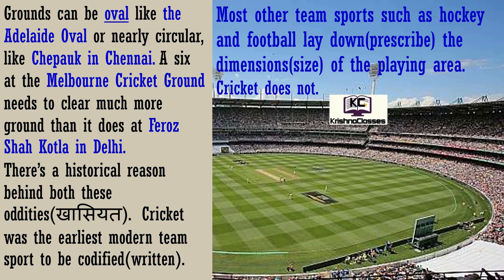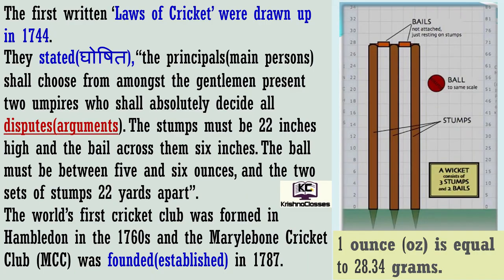A six at the Melbourne Cricket Ground needs to clear much more ground than it does at Firoz Shah Kotla in Delhi. There is a historical reason behind both these oddities. In dono khasiyaton ke peeche ek historical reason hai, aitihasik karan hai. Cricket was the earliest modern team sport to be codified. Cricket aisa pehla aadhunik team sport tha jise codified kiya gaya, jise likhit roop mein rakha gaya. The first written laws of cricket were drawn up in 1744. 1744 mein sabse pehli baar cricket ke laws likhe gaye. They stated: the principals shall choose from amongst the gentlemen present two umpires who shall absolutely decide all disputes.